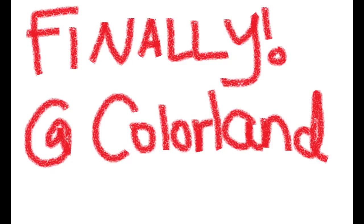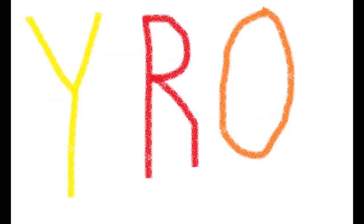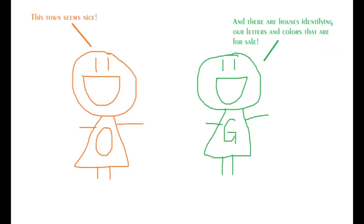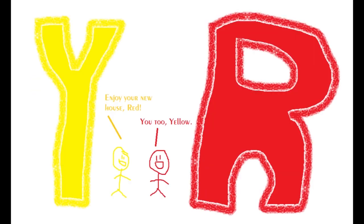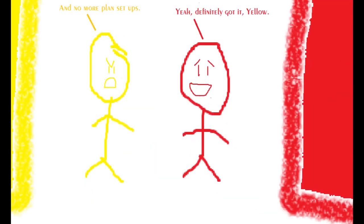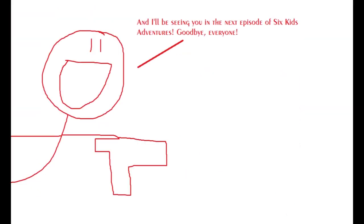Okay, finally, at Colorland. This town seems nice, and there are houses identifying our letters and colors that are for sale. Okay, let's move in these houses. Yay, six new houses for one of us to live in, my letter and color. Enjoy your new house, Yellow. You too, Yellow. And no more plan setups. Yeah, definitely got it, Yellow. And I'll be seeing you in the next episode of Six Kids Adventures. Goodbye, everyone.